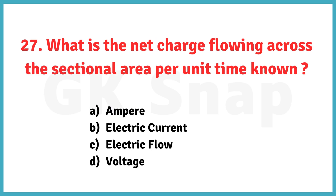What is the net charge flowing across a sectional area per unit time known as? The correct answer is option B: electric current.